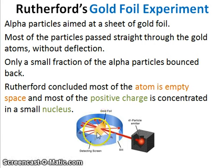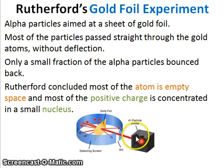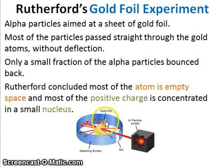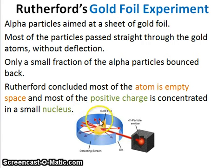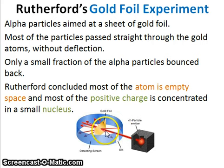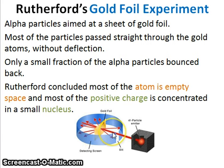Here we can see we have the gold foil. We have an alpha particle emitter and the alpha particles are aimed at this sheet of gold foil, which is very very thin. Now most of the particles just pass straight through the gold foil, but some of them — just a small fraction — bounce back. The conclusion was that the atom is mostly empty space and most of the positive charge is concentrated in a small area, which is the nucleus.